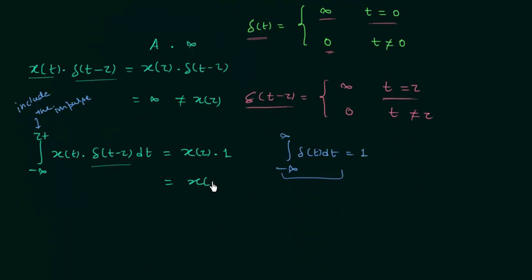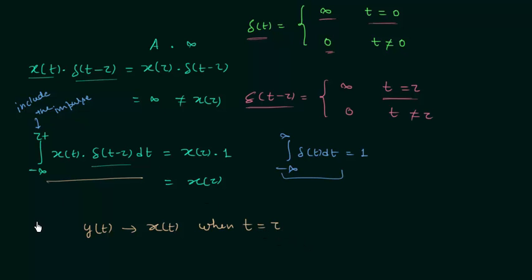So we have x(tau), and in this way we obtain the new signal yt. Yt is nothing but signal xt when time t is equal to tau. This property of the unit impulse signal is known as the sampling property, or sifting property — S-I-F-T-I-N-G. Using this property we can sample out the value of any arbitrary function at any specific instant of time at which the impulse occurs.